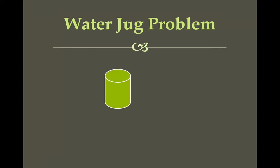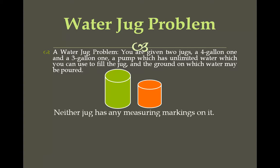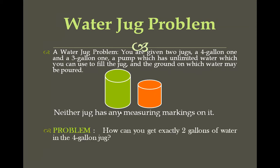The Water Jug Problem involves two jugs — one jug is a 4-liter gallon and another is 3 gallons. We also have a water pipe with unlimited capacity used to fill the jugs, and a ground on which we can pour water. Neither of the jugs is marked, so we have no measuring marks on either jug. The problem is: how can we exactly fill 2 gallons of water in the 4-gallon jug?